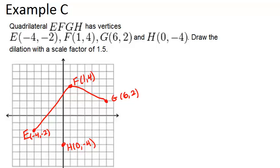And then after that, we're going to use our scale factor to create the new shape, the image. The scale factor is 1.5. Because the scale factor is greater than 1, it's going to be an enlargement, meaning our new shape, the image, is going to be bigger than the original.